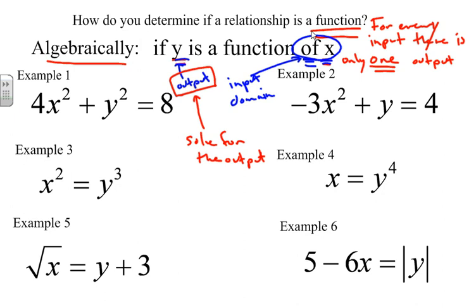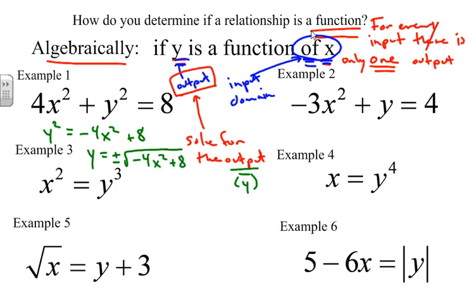In example one, we're solving for Y, which is our output. We have 4x² + 8 = y². We solve for y² and take the square root, but we get two distinct values: plus and minus. Because we have a plus and minus, Y equals plus or minus whatever we plug in for X — so we get two outputs. Because we have two outputs, this equation is not a function.